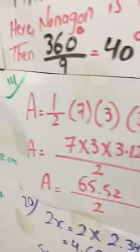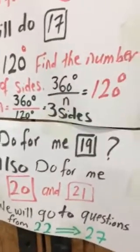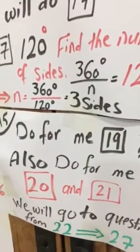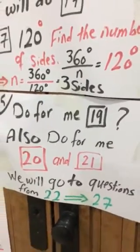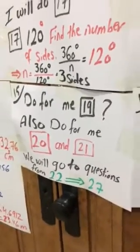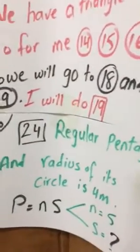Now do for me please guys question number 19. Also do for me 20 and 21. Now we will go to questions from 22 to 27. We will choose number 24, which is so important.